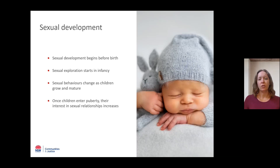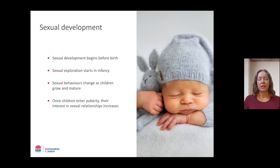From the age of two, kids generally display increasing sexual behaviours. You might see behaviours like touching their own body parts, looking at other people who are naked, failing to respect personal boundaries, being naked at home, or touching the breasts of female caregivers. These behaviours are developmentally expected and usually decrease by the start of puberty.